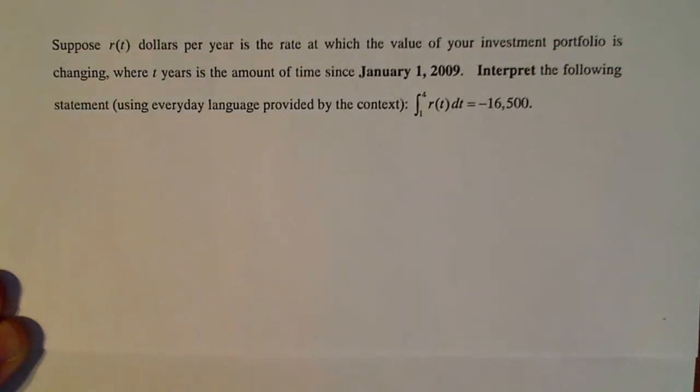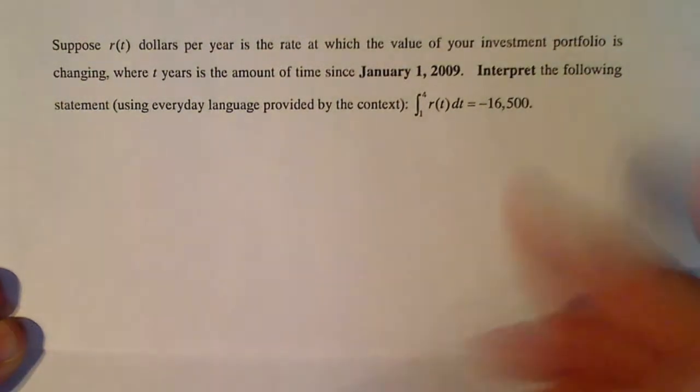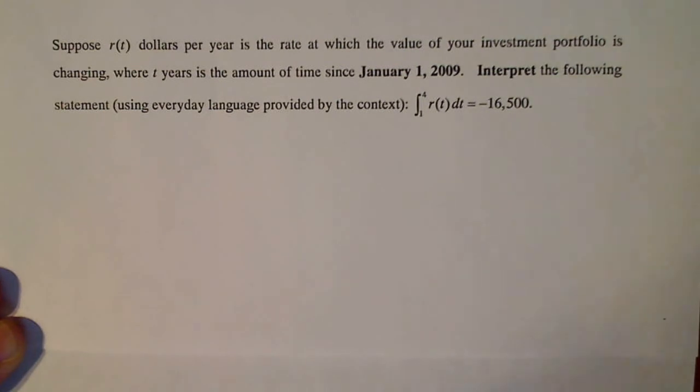Suppose R(t) dollars per year is the rate at which the value of your investment portfolio is changing, where t years is the amount of time since January 1st, 2009. Now I need to interpret the following statement using everyday language provided by the context of this integral: ∫₁⁴ R(t)dt = -16,500.